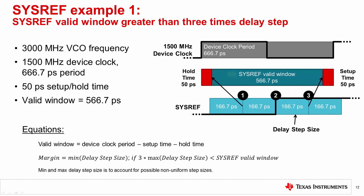Now for an example. Here we have a case where the sysref valid window is greater than three times the delay step size. The digital delay step size is approximately 166.7 picoseconds — the half period of the VCO clock. After calculating the size of the sysref valid window by subtracting the setup and hold time specified by the converter datasheet from the device clock period, we find that no matter the skew between the device clock and the sysref trace routing, three digital delay settings will occur inside the sysref valid window. When a minimum of three delay adjustment settings fall inside the valid window, the middle option can be selected and the system will have a margin of at least the delay step size. Provided the device clock to sysref skew variation is less than the step size, deterministic timing is assured.